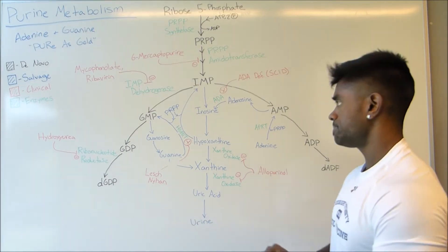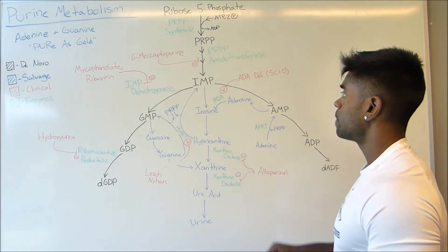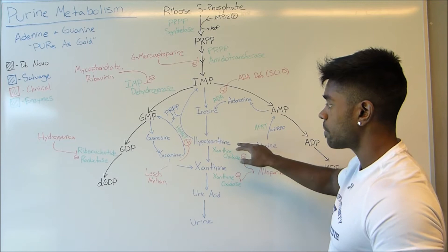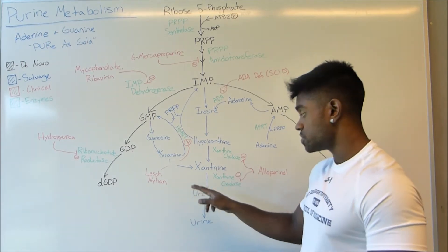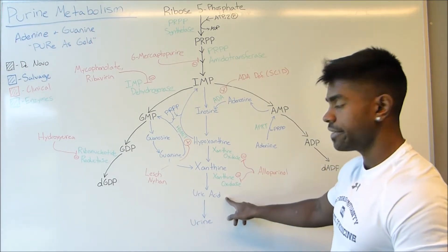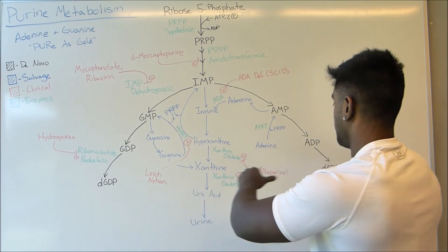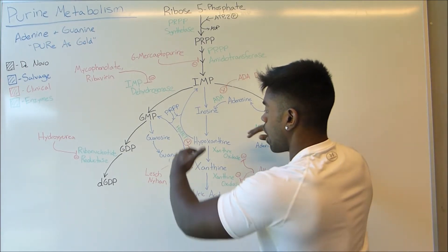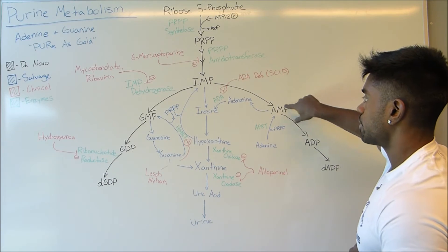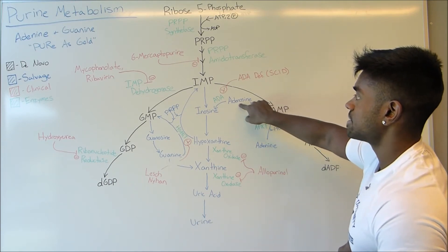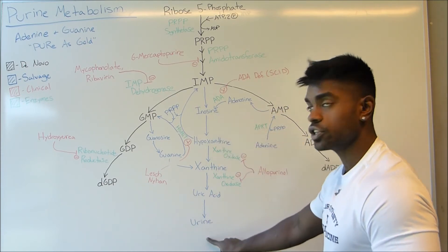Now let's talk about how these purines are completely broken down and excreted into the urine. IMP is straightforward in that it's eventually going to form hypoxanthine, and then hypoxanthine is going to form xanthine using xanthine oxidase. Xanthine is going to go to uric acid, also using xanthine oxidase, and then uric acid is excreted into the urine. With AMP, once it's broken down into adenosine, it's going to use adenosine deaminase in order to form inosine, which then follows the same pathway through hypoxanthine on towards the urine.